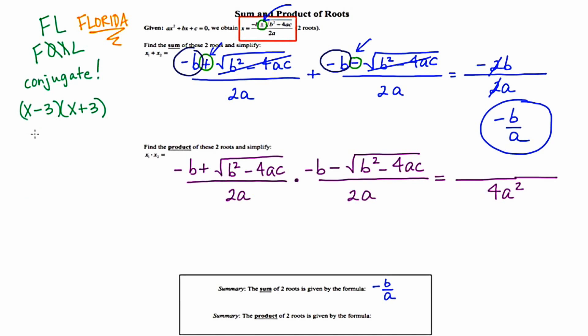In this case, I'm just going to do a Florida situation. The product of the first terms, x times x, x squared, and then the product of the last terms is minus 9. Essentially, what I did here is I multiplied a binomial by its conjugate using the Florida technique.